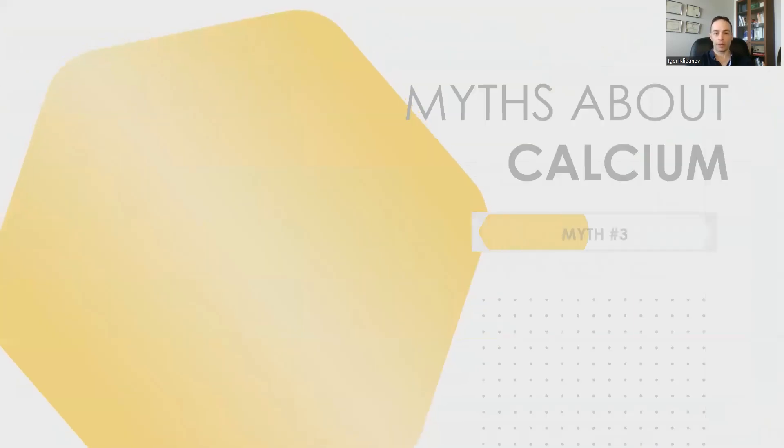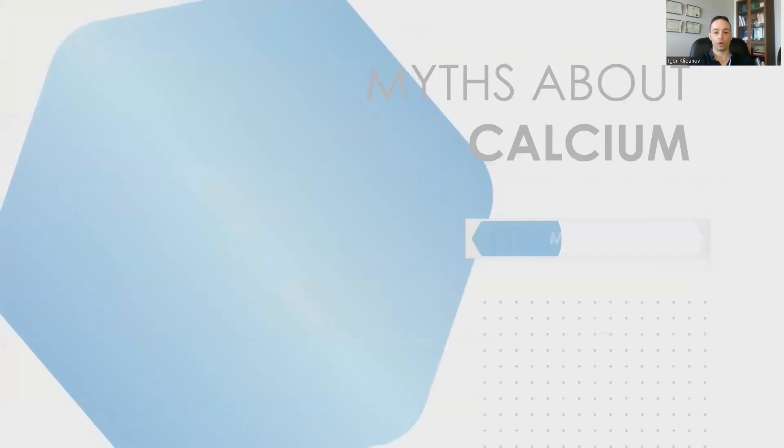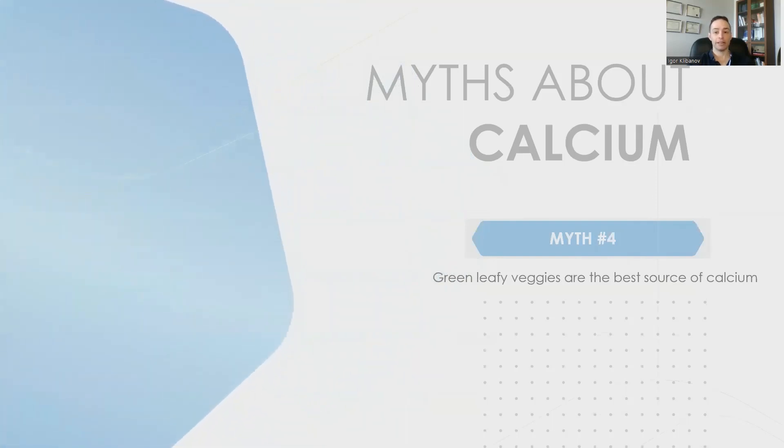Another common myth about calcium is that all calcium sources are created equal. If you know anything about bioavailability, that's not the case because different foods have different absorption rates. Some foods have a really high absorption rate. You extract a lot of calcium from them and it actually goes in your body. Other foods might be high in calcium, but they have a very low bioavailability or a very low absorption rate. And myth number four is that green leafy veggies are the best source of calcium. It is not for reasons that you're going to see later in this video.